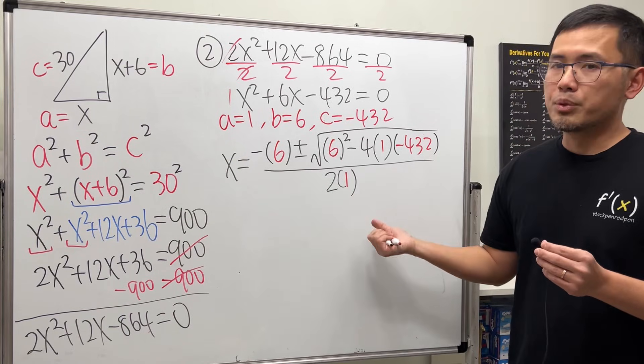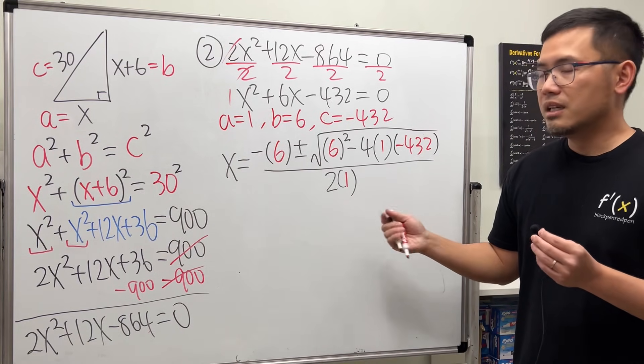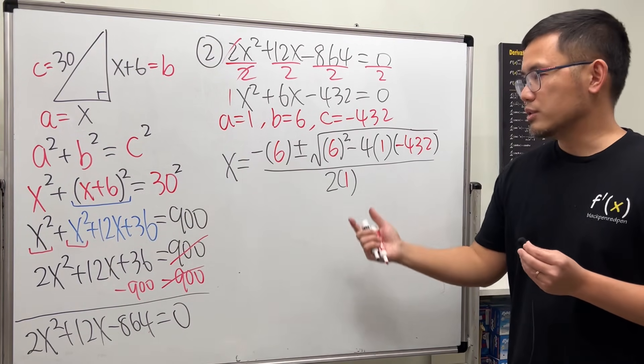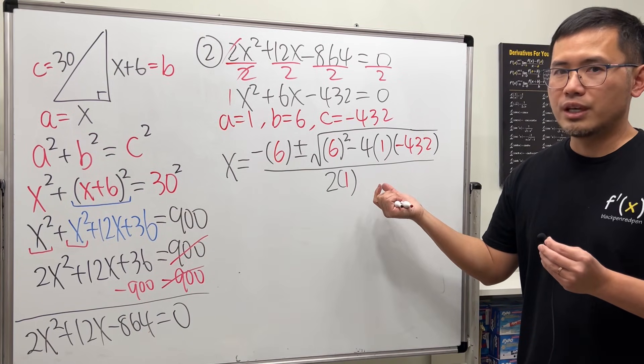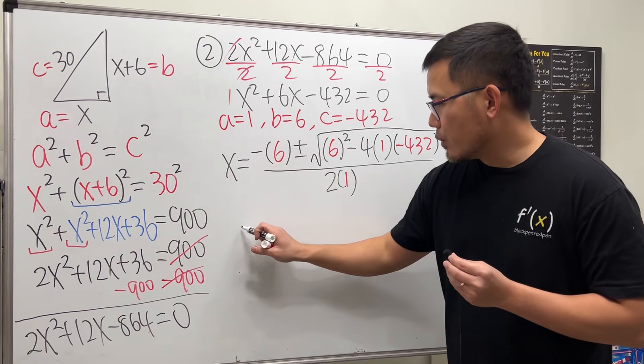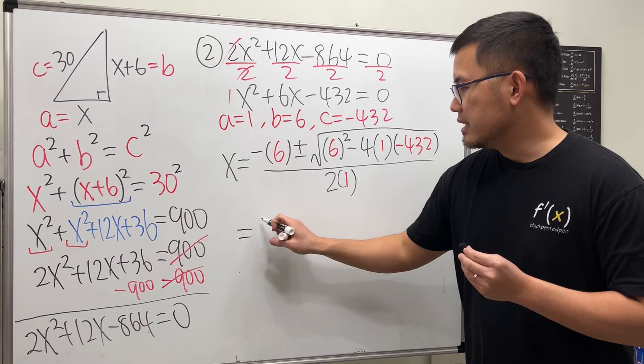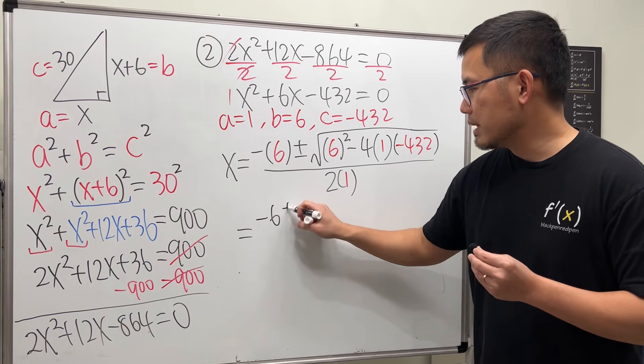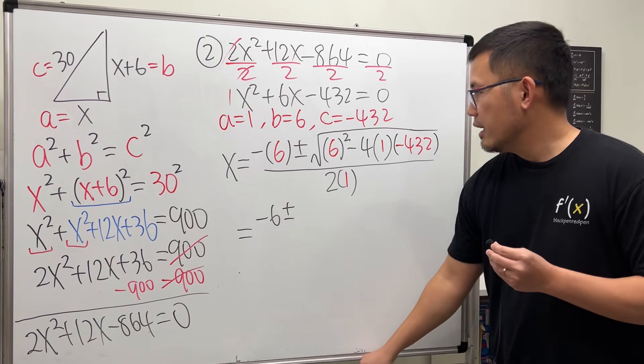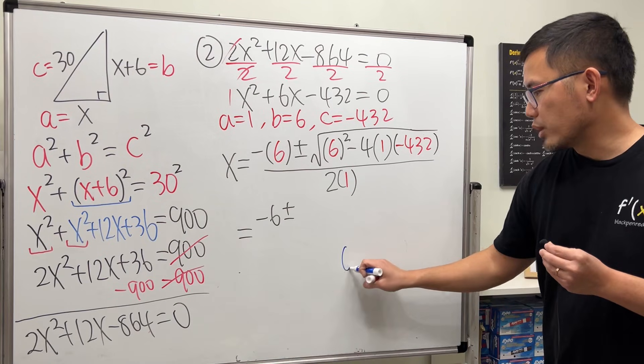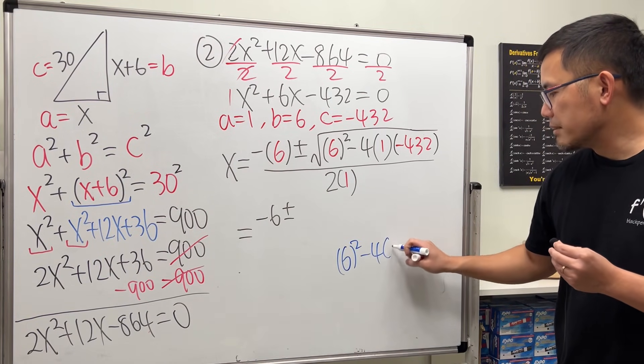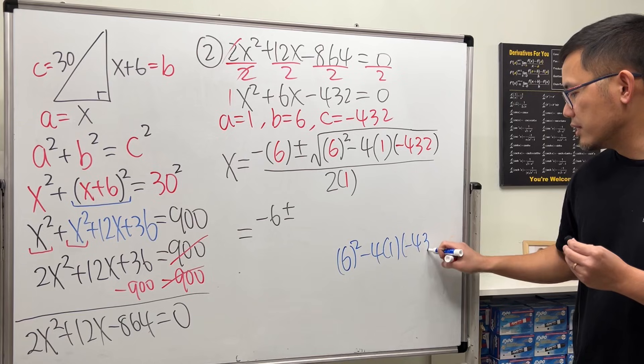And now, we can just compute it. And the beauty of this is that it's much more straightforward, because you can just use the calculator for the computation. So, we will end up with what? -6. And then we still have the plus or minus. And then for this right here, let me just write this down right here for you. 6² - 4 times 1 times -432.